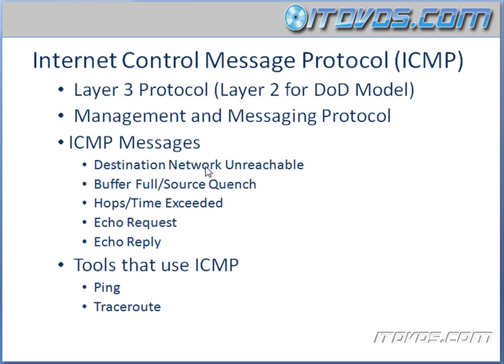Destination Network Unreachable is commonly sent by a router that lets the host know that whatever network they're trying to get to is unreachable. Buffer Full, or Source Quench, means that it's actually Congestion Control — basically the router is saying, hey, my buffer's full or I'm running out of memory, can you slow down your throughput? Hops Time Exceeded means that the time to live of a packet was exceeded.